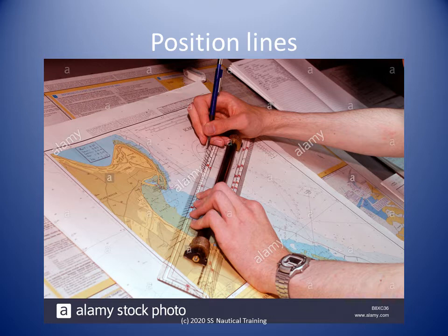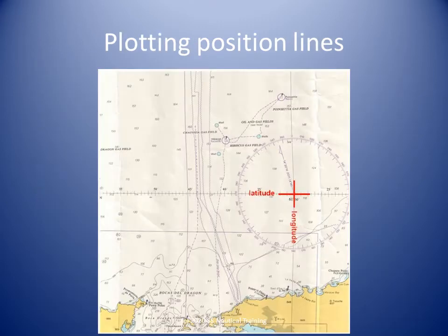He can then adjust his course as required. We put lines on the nautical chart where the line of latitude from the GPS and the line of longitude from the GPS intersect. The lines of latitude and longitude are position lines, and where they intersect is a position fix.